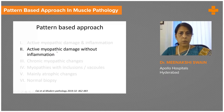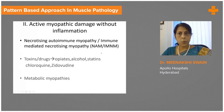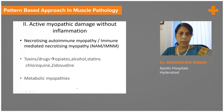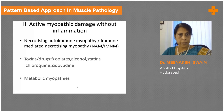Coming to the next group, which is active damage without inflammation. The prototype here is necrotizing autoimmune myopathy or NAM, otherwise known as immune-mediated necrotizing myopathy. You can also have this pattern with toxins and drugs related to opiates, alcohol, amiodarone, chloroquine, and statins as well. Some metabolic myopathies could also present with this pattern.